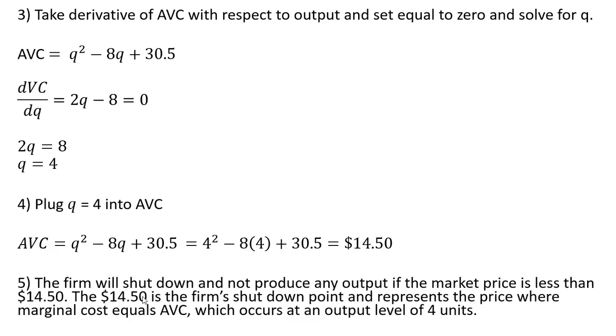And now we can answer our question. The firm will shut down and not produce any output if the market price is less than $14.50. The $14.50 is the firm's shut down point and represents the price where the marginal cost equals the average variable cost. And this occurs at an output level, as we found here, at 4 units.